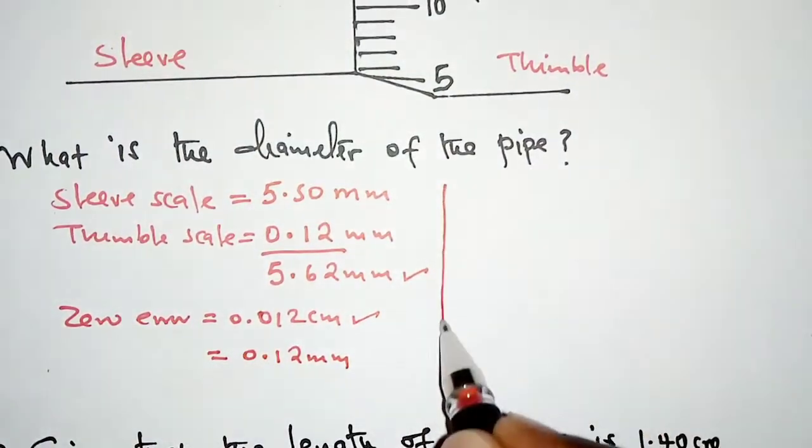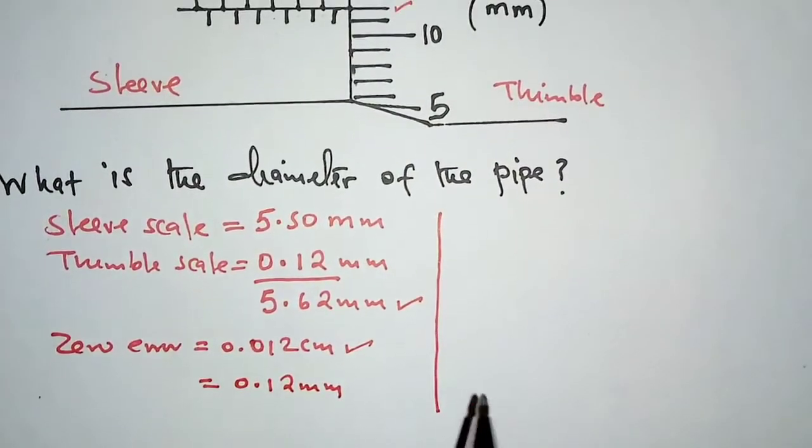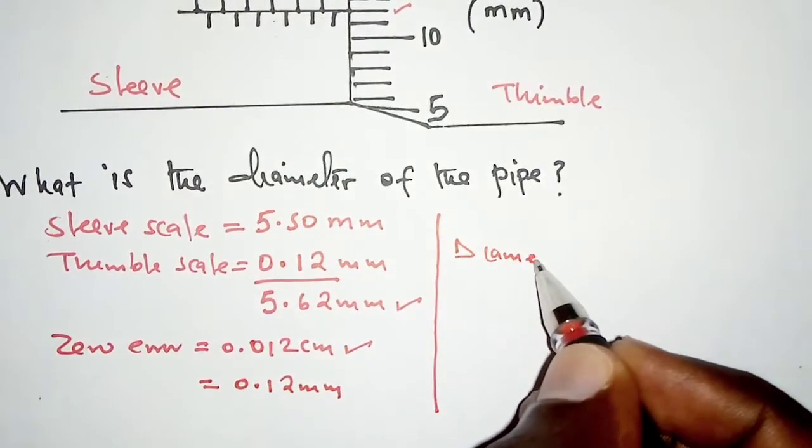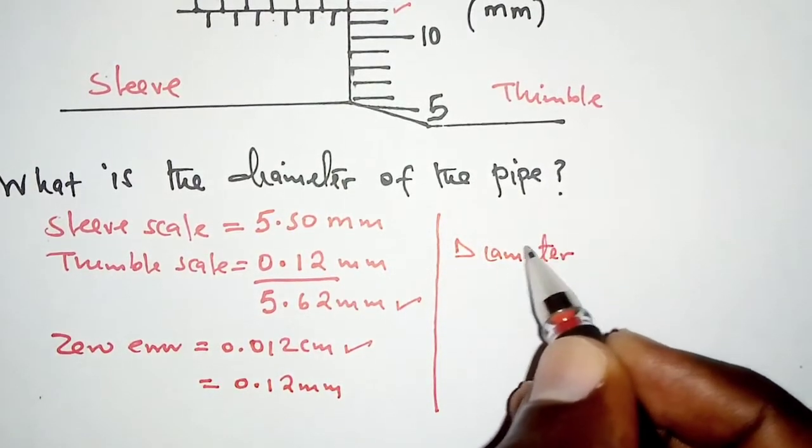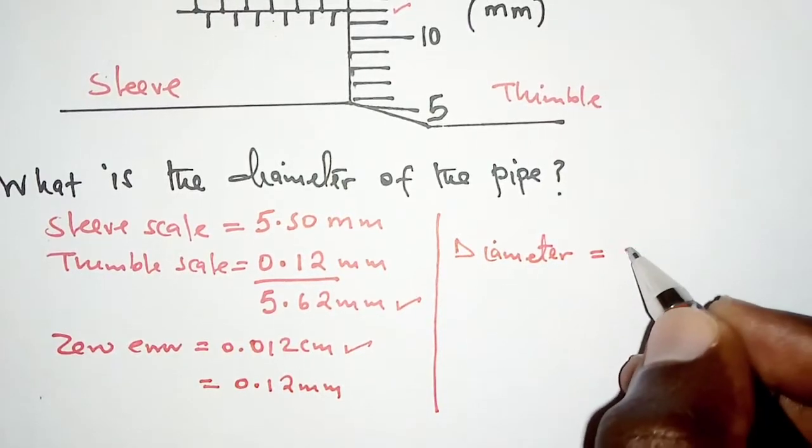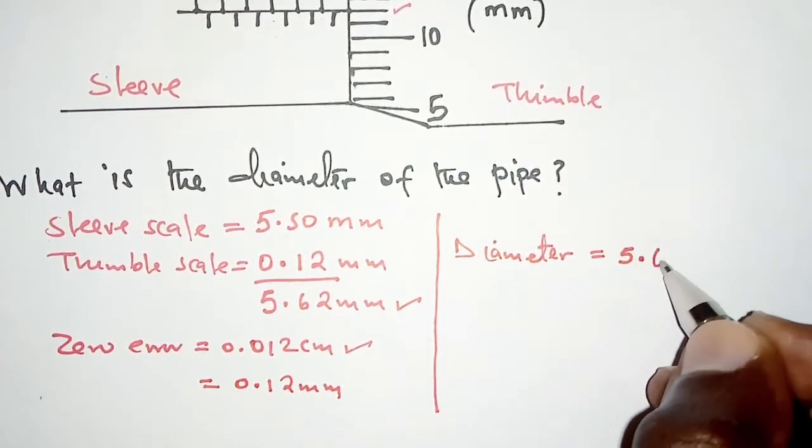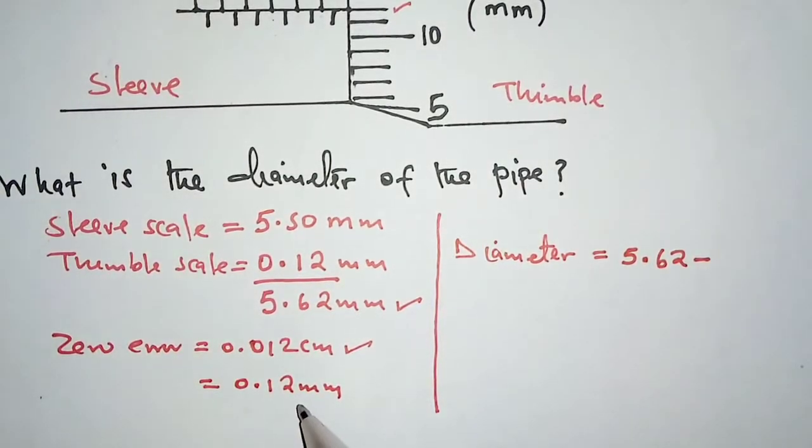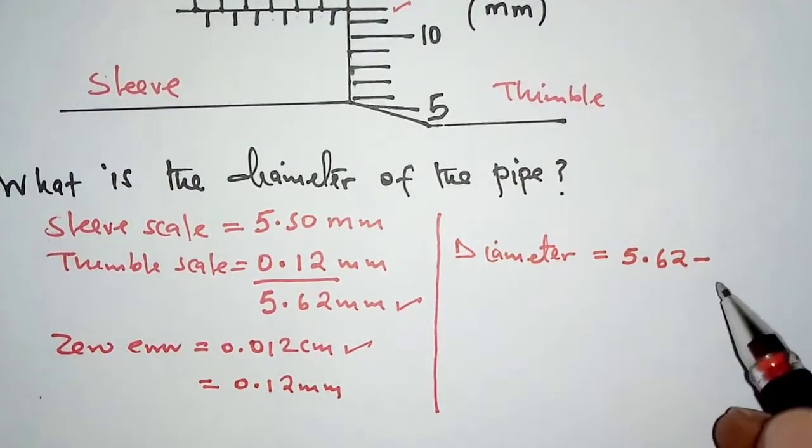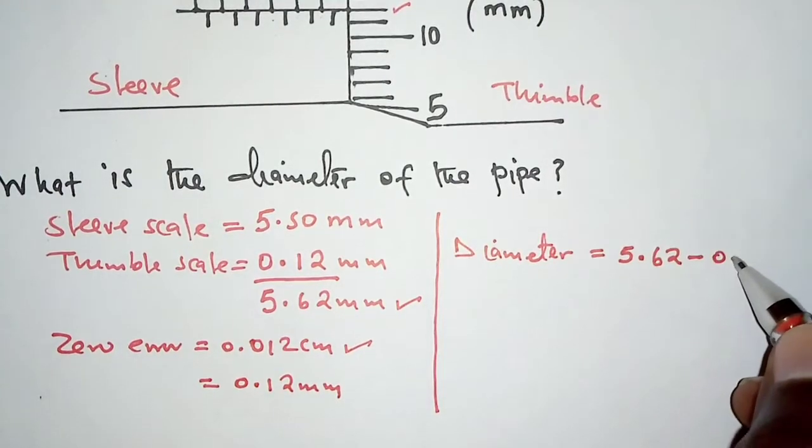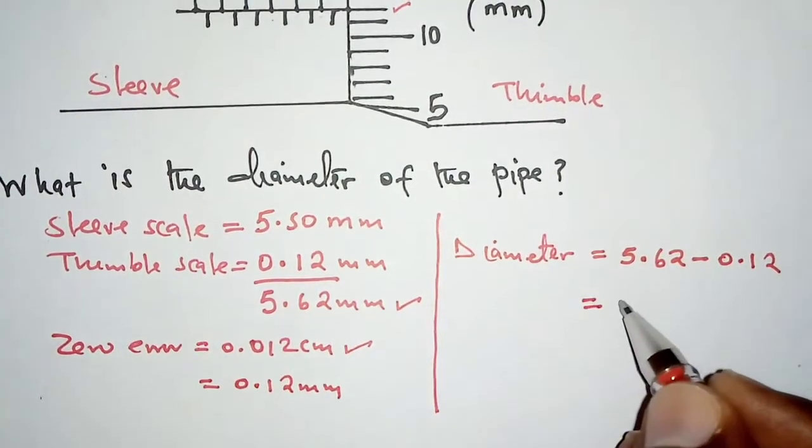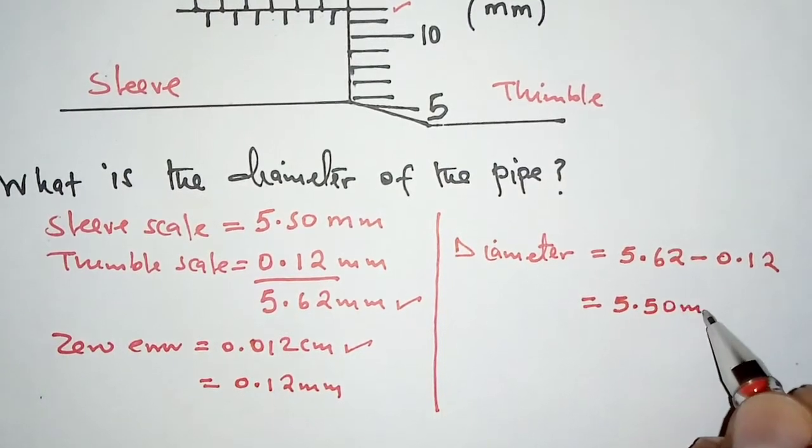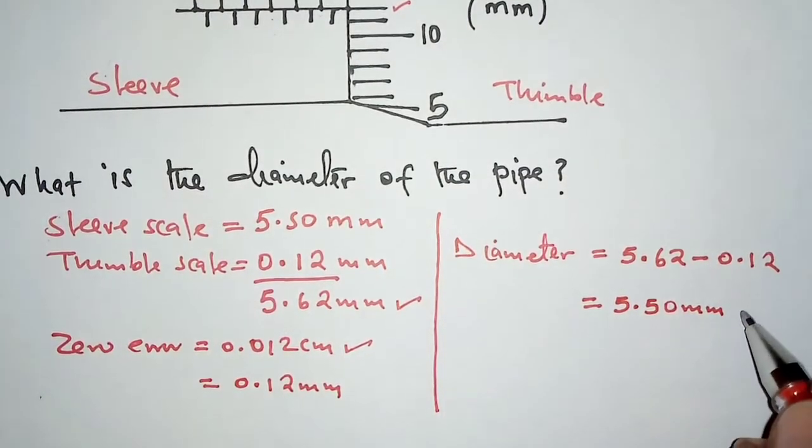At this point, we're going to correct the zero error by having the diameter given as 5.62 minus the zero error. Because the zero error is positive, we subtract: 5.62 minus 0.12, and that gives us 5.50 millimeters. That is for part A.